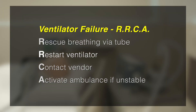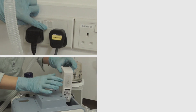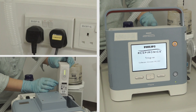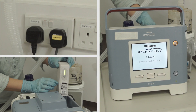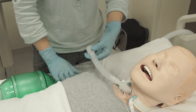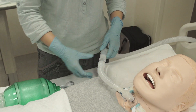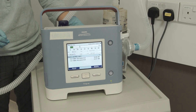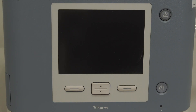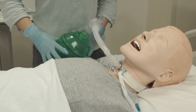R is for restart ventilator. Check the power supply, connection, and battery, then restart the ventilator. If the restart is successful, connect the ventilator back to the tracheostomy tube for ventilation and monitor closely to ensure it is functioning normally. If the ventilator is unable to restart or if the alarm persists, continue with rescue breathing.